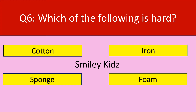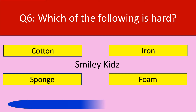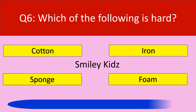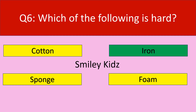Question number six. Which of the following is hard? Options are cotton, iron, sponge, and foam. Your time starts now. Your time is up. The correct answer is iron. Iron is hard.